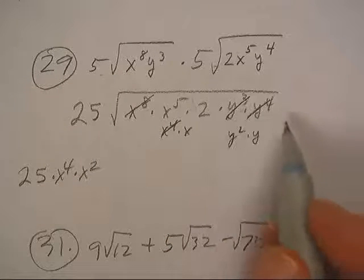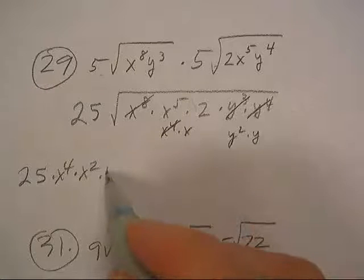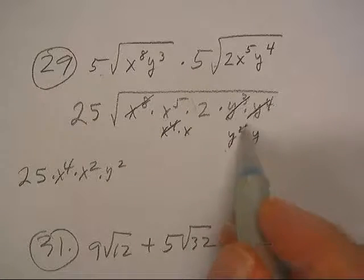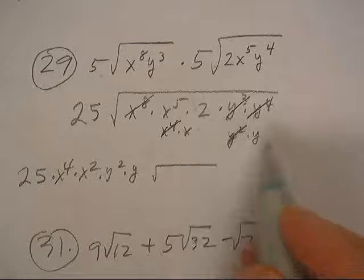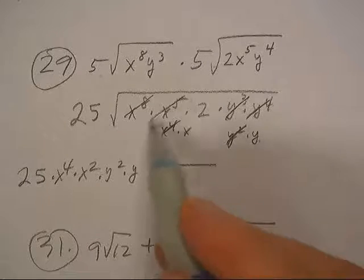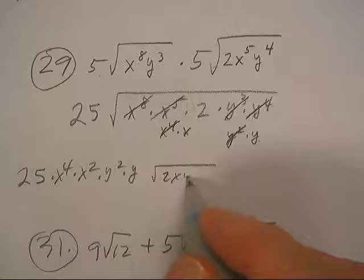For the y to the 4th right there, I take out y squared, for the y squared, I take out y, 2xy stuck in the middle, or stuck underneath.